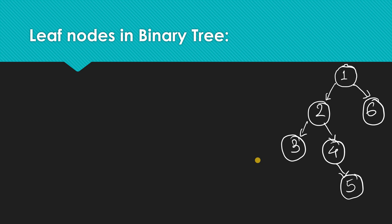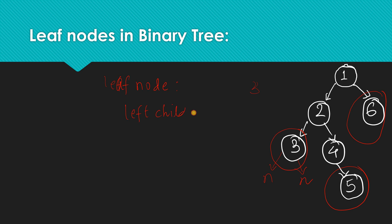So how to find the leaf nodes in a binary tree? Suppose this is our binary tree. How many leaf nodes are there? This is a leaf node, this is a leaf node, and this is a leaf node — so we have three leaf nodes. A leaf node is a node for which the left child and the right child are both null. That's how we identify a leaf node in a binary tree.